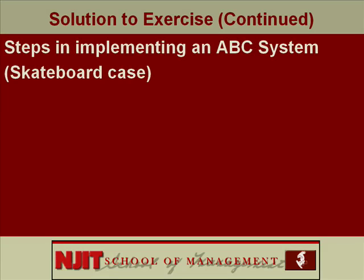Let's go to Part B and look at ABC. Steps in implementing an ABC system — let's talk about the skateboard case. Step 1: analyze the activities. We already did that. We have analyzed activities into administration, purchasing, production (which includes warehousing and handling, cutting, gluing, setting up molds, painting, assembling), and marketing. So this step is done for our case study.